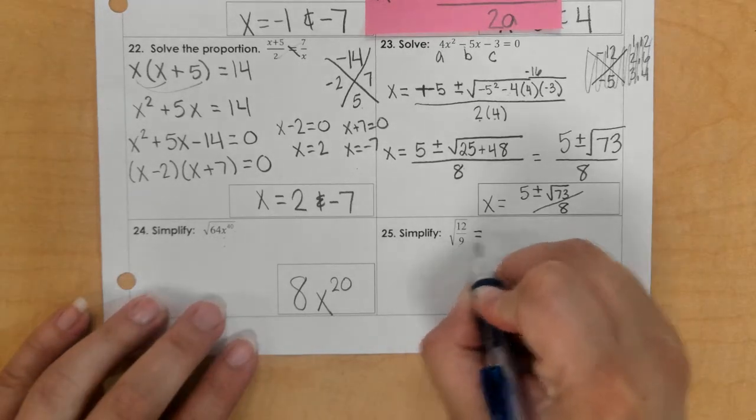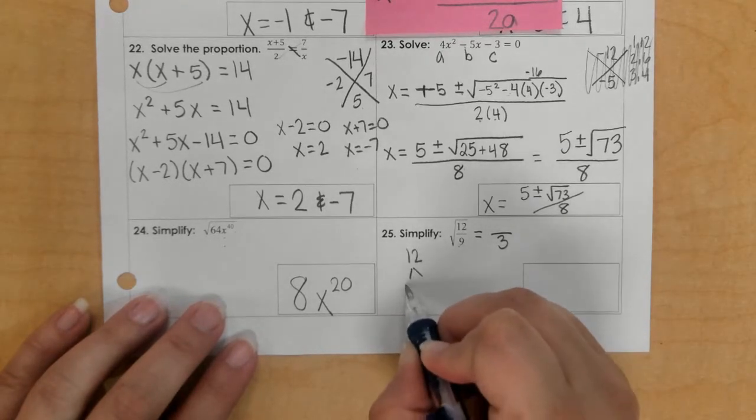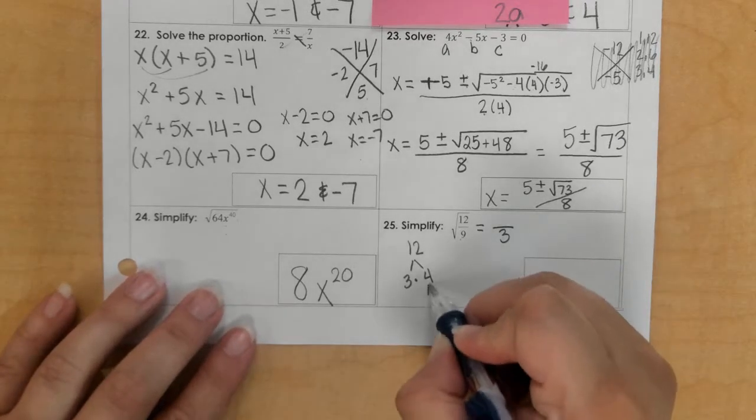25, we have the square root of 9, which is 3, but 12 can break down. We could do 3 and 4, or 2 and 6, it doesn't matter, and then we just keep breaking that down.